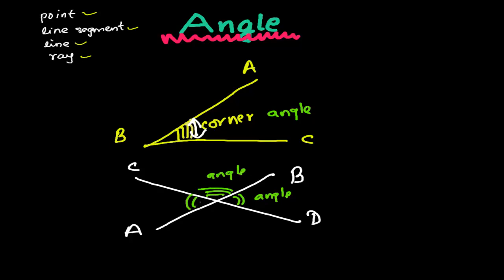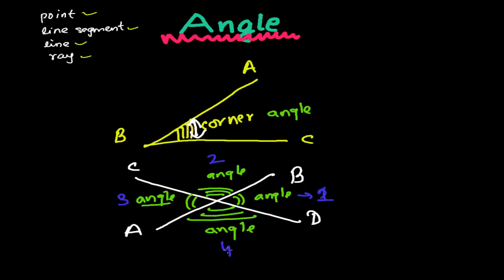Here also we are getting corners, and each corner is exactly an angle. So whenever two line segments or lines intersect, there is formation of four angles — first, second, third, and fourth — so whenever two lines intersect each other, four angles are formed.